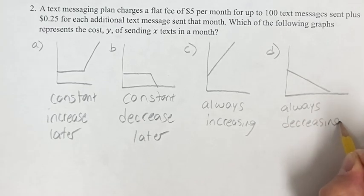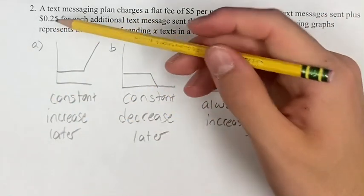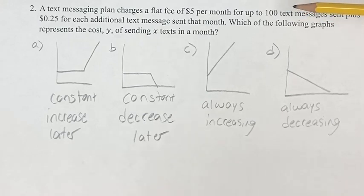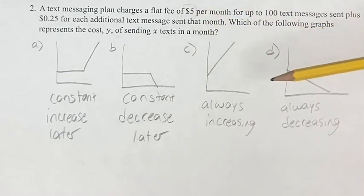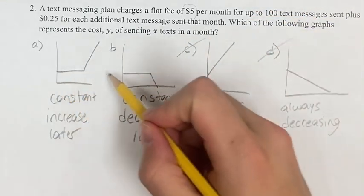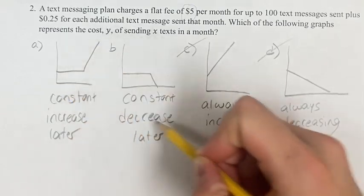So which of these situations is reflected in the actual information we're given in the problem? A text messaging plan charges a flat fee of $5 per month for up to 100 text messages. So for the first hundred text messages we are consistently at $5, it's not changing, it's constant. So C and D are out, and then A and B both have this constant for the first hundred messages reflected in these horizontal lines right here.